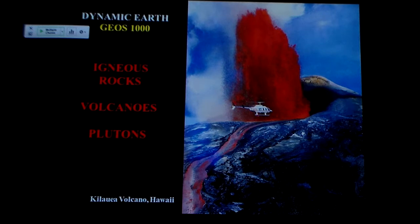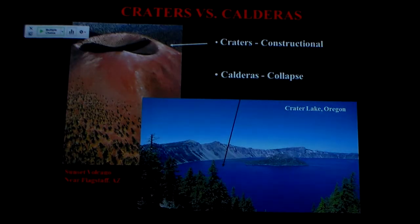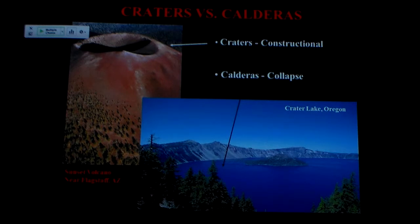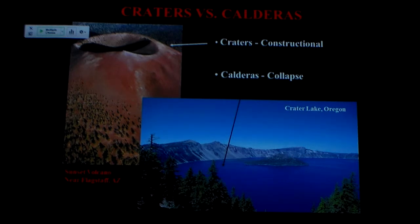We were talking about craters versus calderas when we finished up last time. A crater is simply the vent where gas had blown out during the making of the volcano — a very gas-rich environment, probably a more viscous, silica-rich lava. Cinder cones were pretty typical of that, giving us a constructional crater. Calderas, on the other hand, are destructive — more associated with composite cones where the cone collapses down into the evacuated magma chamber below.